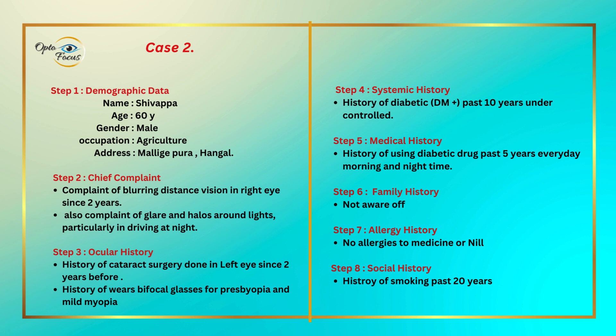Step 4 — Systemic history: History of diabetes for the past 10 years, under control. Step 5 — Medical history: History of using diabetic drugs for the past 5 years, every morning and night. Step 6 — Family history: Not aware of. Step 7 — Allergy history: No allergies to medicines. Step 8 — Social history: History of smoking for the past 20 years.